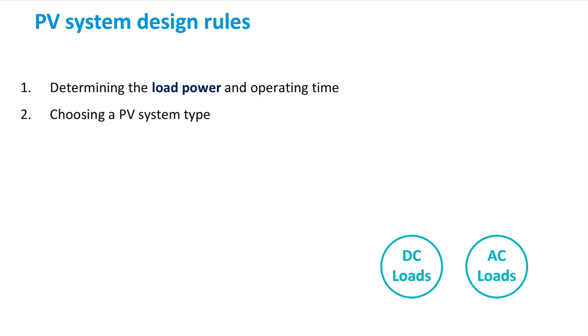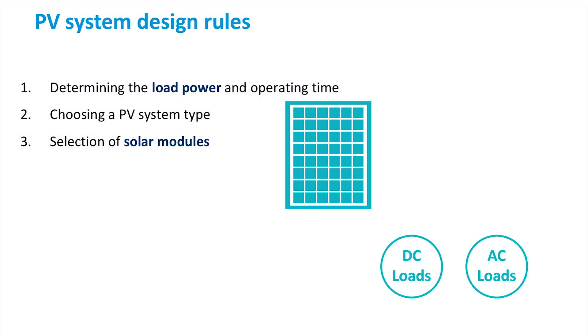Then, we have to choose the type of PV system. Basically, this choice is between a grid-connected system and off-grid PV system. As we have already seen, grid-connected and off-grid PV systems use different electrical components. However, in both configurations we have the PV modules, which generate electricity.